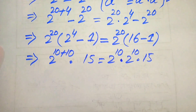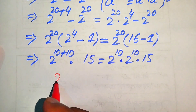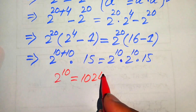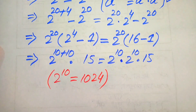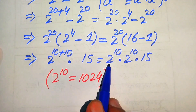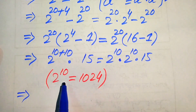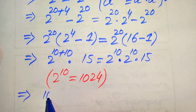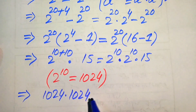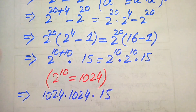We know that 2 to the power of 10 equals 1024, and you can easily get this value without using a calculator. Now we replace this value in both places, and it becomes 1024 multiplied by 1024, multiplied by 15.